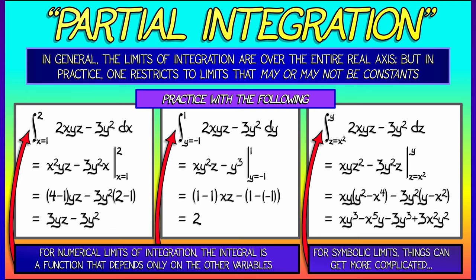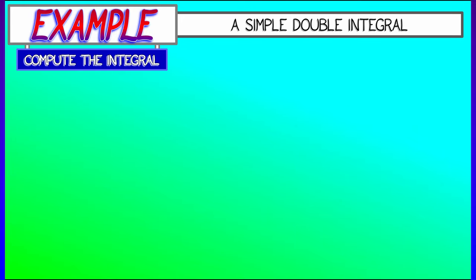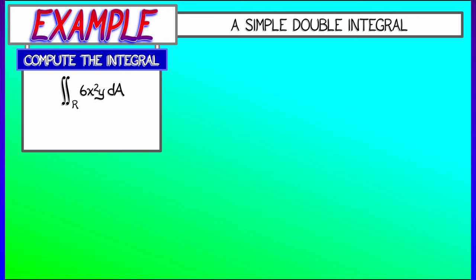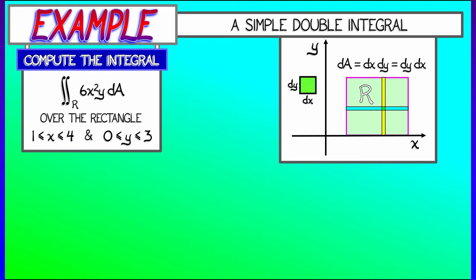Let's consider a simple double integral: compute the integral of 6x²y with respect to area in the xy-plane over a nice rectangular region, as x goes from 1 to 4 and y goes from 0 to 3. We could fix x and integrate with respect to y, or fix y and integrate with respect to x first. Either way, the area element dA is dx dy or dy dx — the order doesn't matter thanks to Fubini.